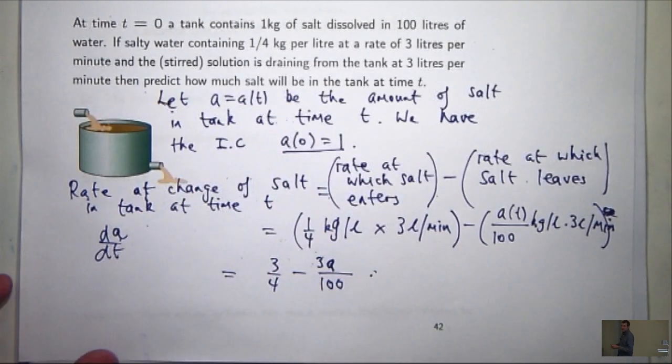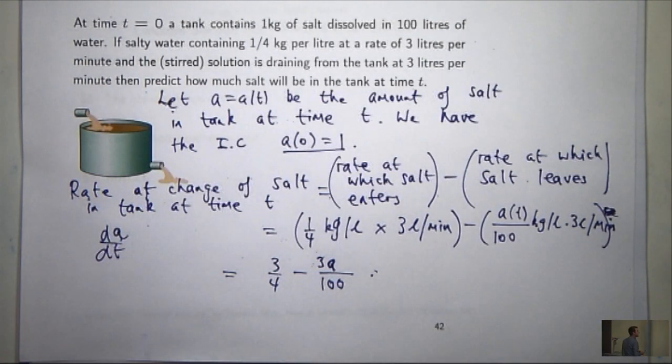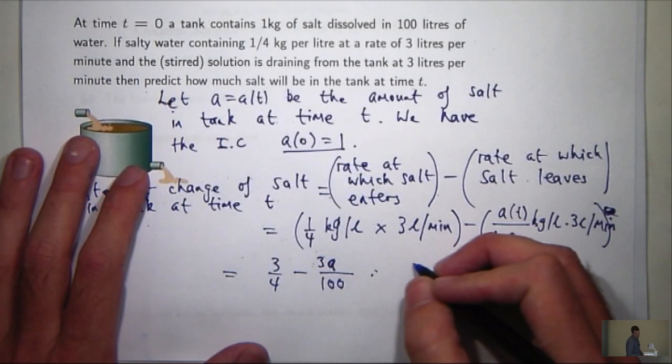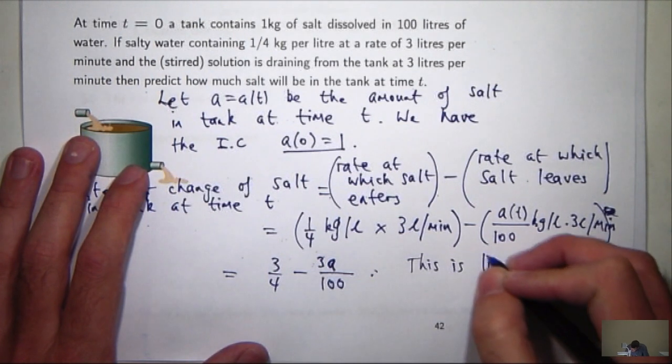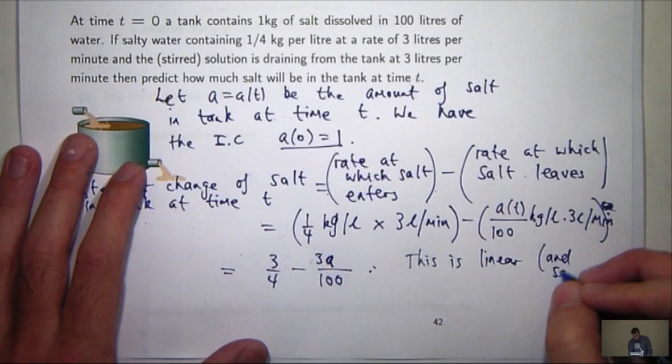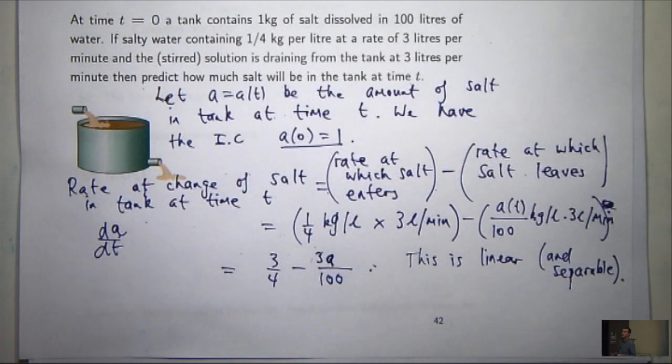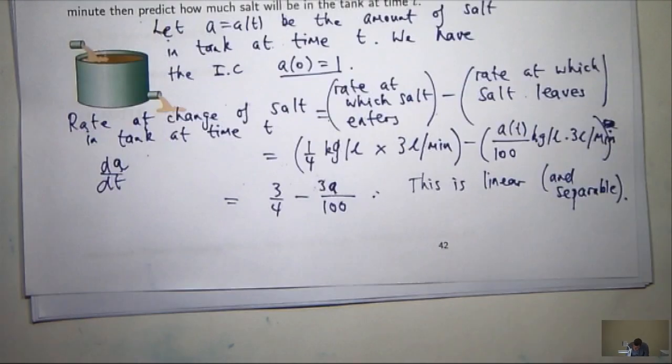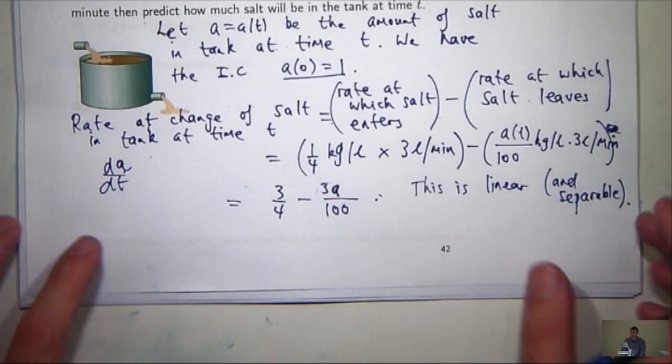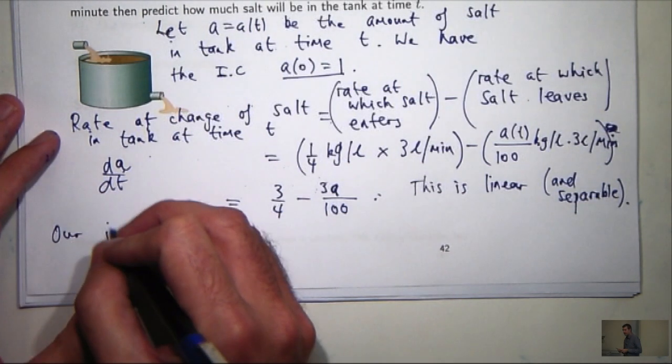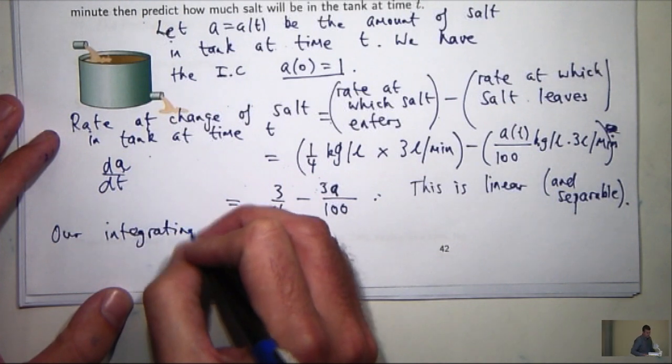Alright, so we've done it. We've come up with our differential equation. We have an initial condition. All we need to do is solve it. What kind of differential equation is this? Well, it's separable and it's linear. So you can choose which method you want to use. You can separate the variables or you can go through, you know, work out the integrating factor and do all that sort of stuff. So we have a choice. I'm going to do it as a linear differential equation but it's up to you.